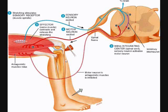When the muscle is stretched — for example, when a reflex hammer, like you see here, taps the patellar ligament — it creates a stretching in the muscle. That will stimulate the receptor, which will then create a nerve impulse along the sensory neuron.